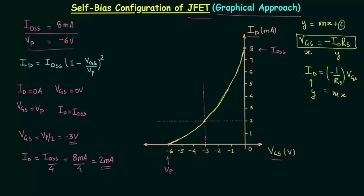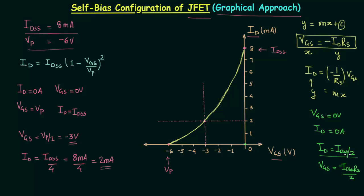To plot the straight line we need two points. Setting VGS = 0V gives ID = 0A, so the first point is the origin. For the second point, we set ID equal to IDSS/2, which is 8mA/2 = 4mA. This gives VGS = -IDSS·RS/2. Since IDSS = 8mA and RS is known from the circuit, the x-coordinate is determined, and the y-coordinate is 4mA.